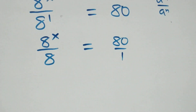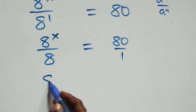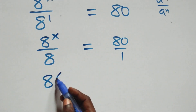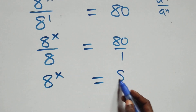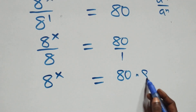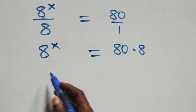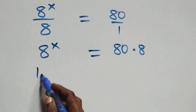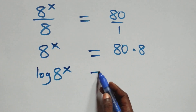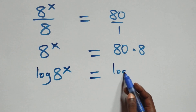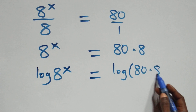The next step: we cross-multiply — 8 raised to power x times 1, same thing as 8 raised to power x, equals 80 times 8 on this side. From here, we take the log on both sides: log of 8 raised to power x equals log of 80 times 8.